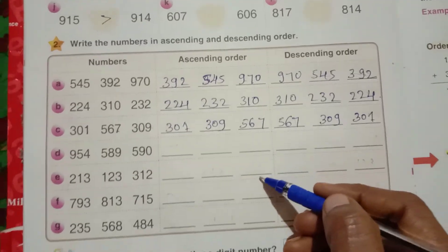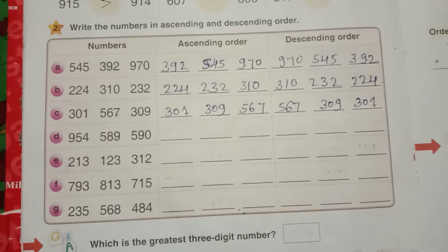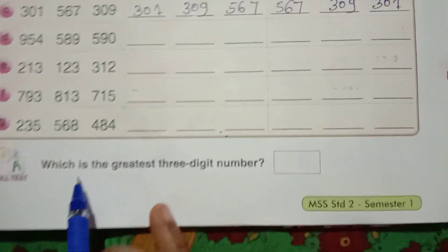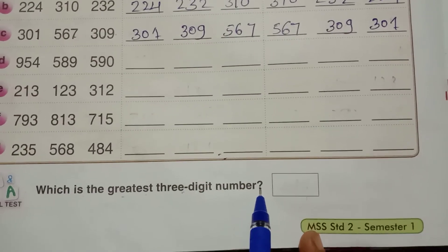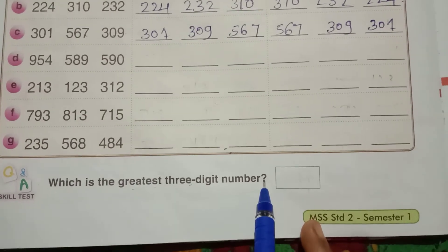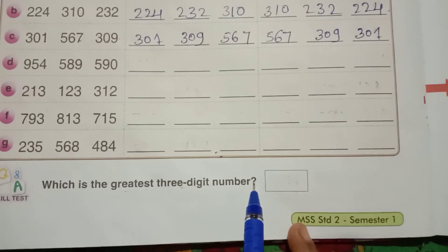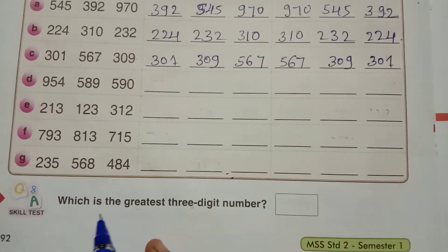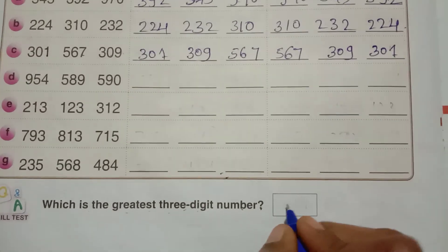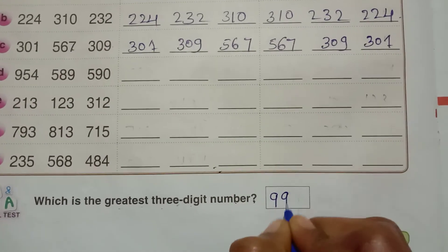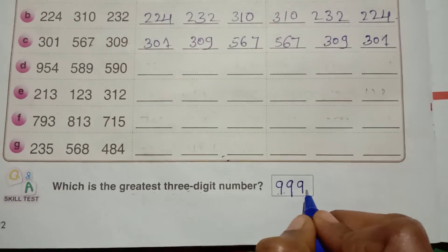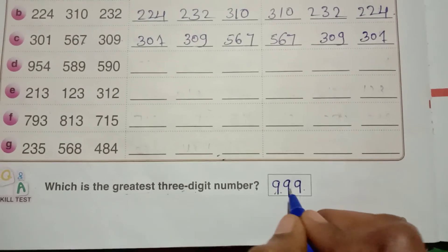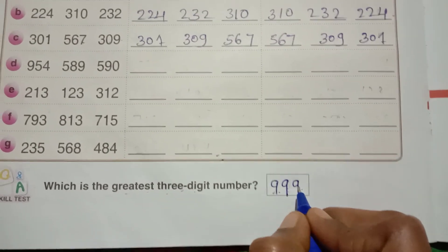Like that, remaining numbers you have to write in your textbook. Lastly, see here, which is the greatest three-digit number? Dear students, in the three-digit lesson, the greatest three-digit number is 999. This is the three-digit greatest number.